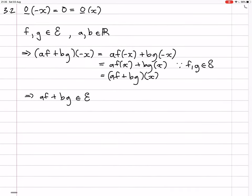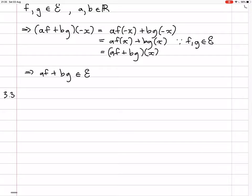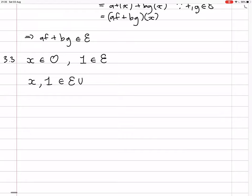Okay, so 3.3. Function x is odd and the function 1 is even. So that means that x and 1 are both in this E union O thing, which is even and odd functions. But x plus 1 is not even or odd. It's not even and it's not odd. So it's not in the set of all even and odd functions.